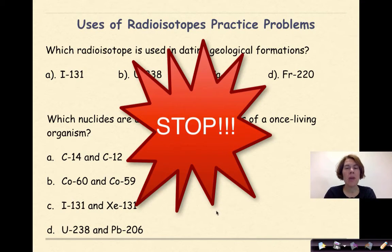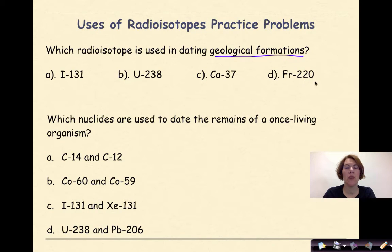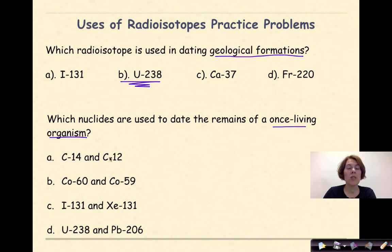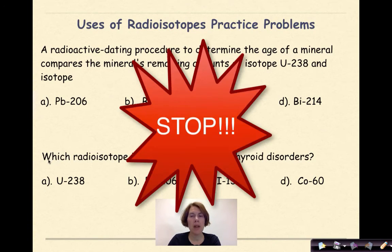Welcome back. Which radioisotope is used in dating geological formations? The options are iodine-131, uranium-238, calcium-37, and francium-220. The correct answer is uranium-238, which we associate with dating geological formations. Which nuclides are used to date the remains of a once-living organism? The correct answer is carbon-14 and carbon-12, because a once-living organism contains carbon.